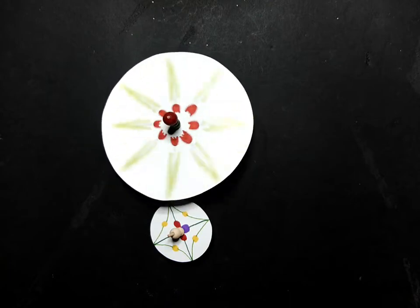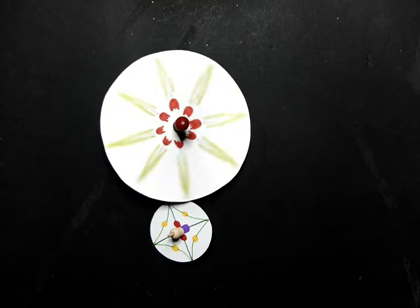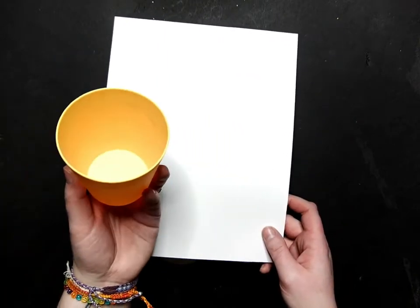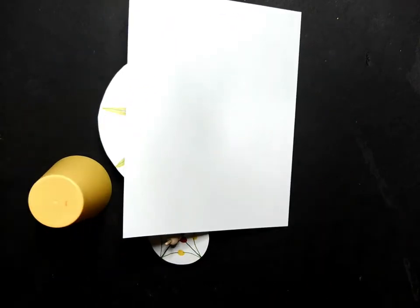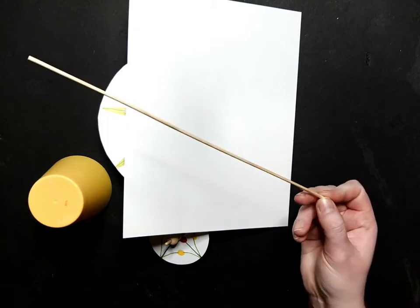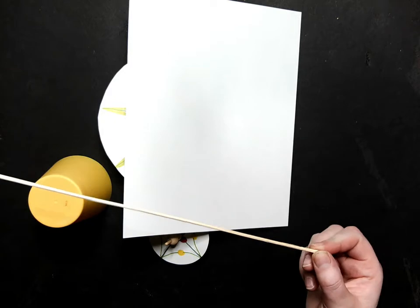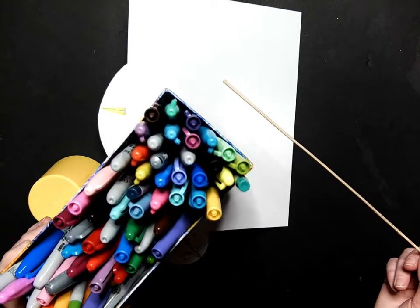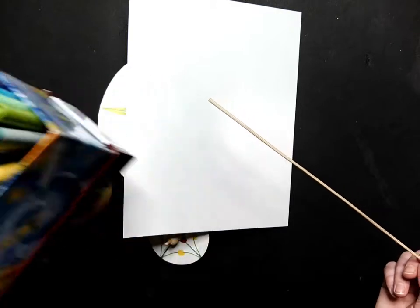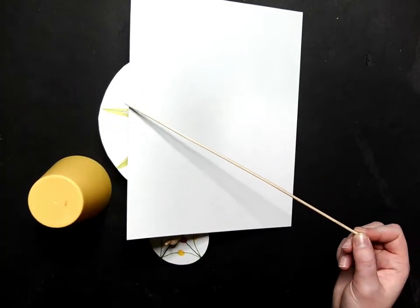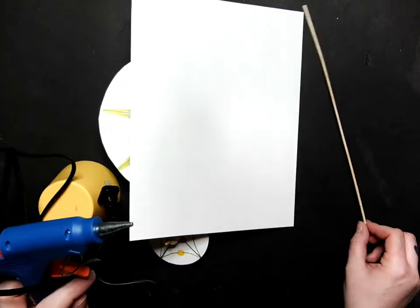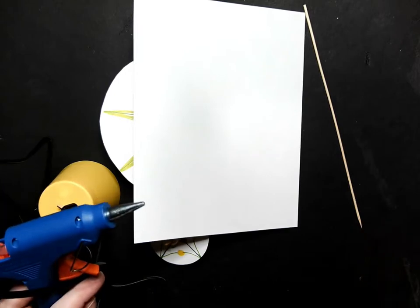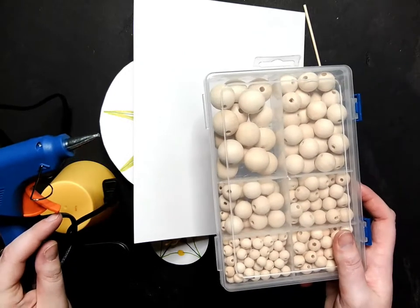All you're going to need is a piece of cardstock, something to trace a circle with, a bamboo skewer or any other type of skewer you might have, some markers to decorate your spinner, and a hot glue gun to glue the wooden beads into place.